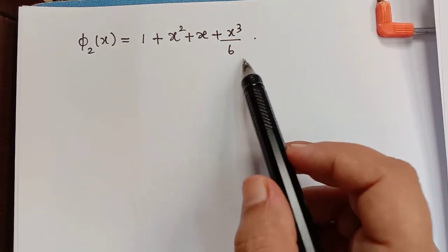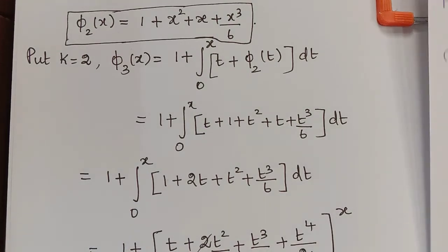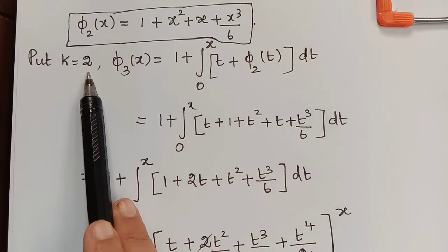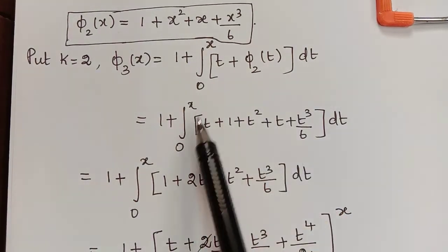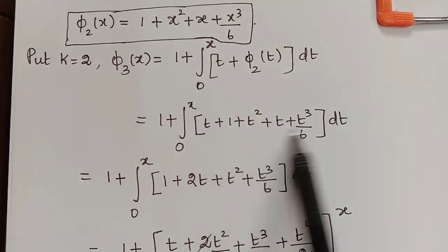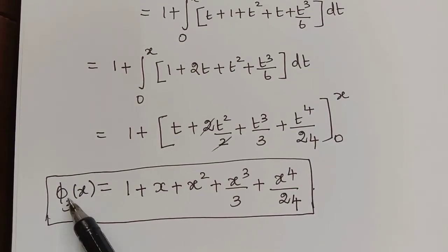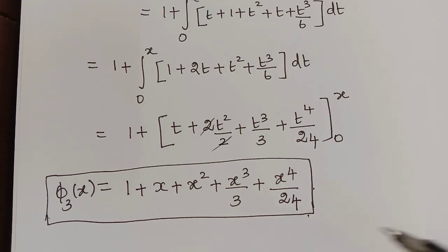In a similar way, to find the fourth approximation φ₃(x), we put k = 2. Substituting φ₂(t) and integrating with the limits applied, we obtain the fourth approximation φ₃(x). Hence we have found all four approximations of the given problem.